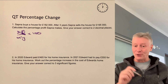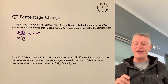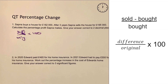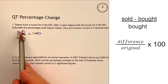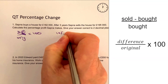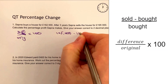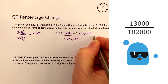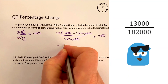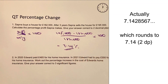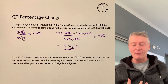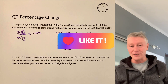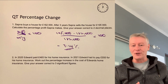So the difference is the difference between what she bought it for and what she sells it for, and the original is what she actually bought it for. In question one, the difference is going to be 195,000 take away 182,000, divided by 182,000. Pop all that into a calculator and you should get 7.14%. Difference over original multiplied by 100 is a great way to remember percentage change.